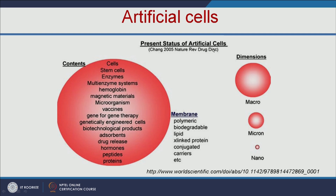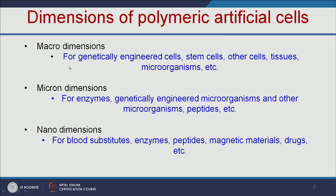Let us see the present status of artificial cells. We can encapsulate cells, stem cells, enzymes, and everything inside an artificial membrane. This membrane could be made up of polymeric, biodegradable, lipid, or protein-based materials. These artificial cells are available in various dimensions — macro, micro, or nano — depending on the cellular content to encapsulate. In macro dimensions, we can encapsulate genetically engineered cells, stem cells, and even microorganisms. In micro dimensions, we can encapsulate enzymes, genetically engineered microorganisms, and peptides. In nano dimensions, we can make blood substitutes or encapsulate enzymes, magnetic materials, drugs, and other peptides.